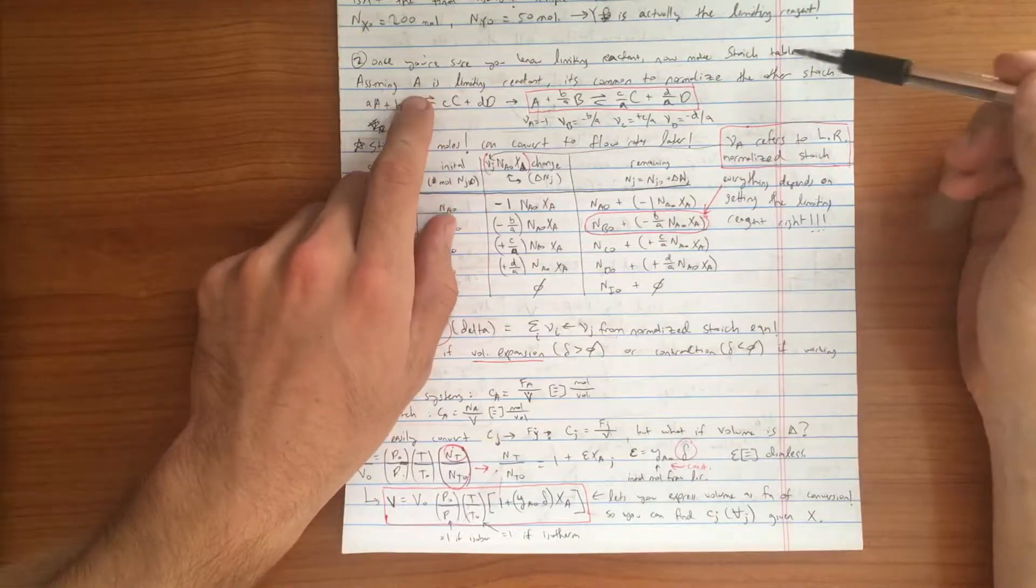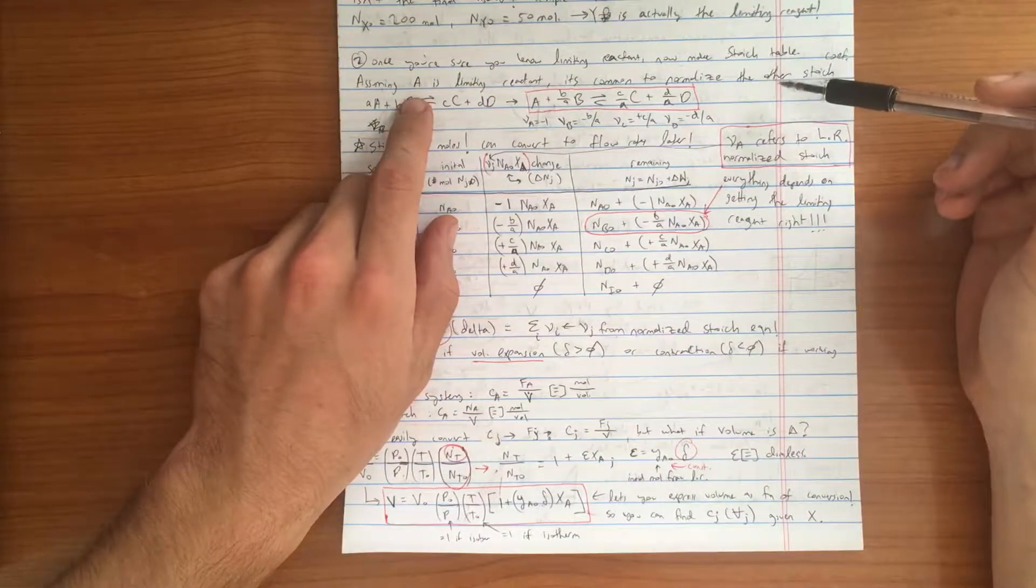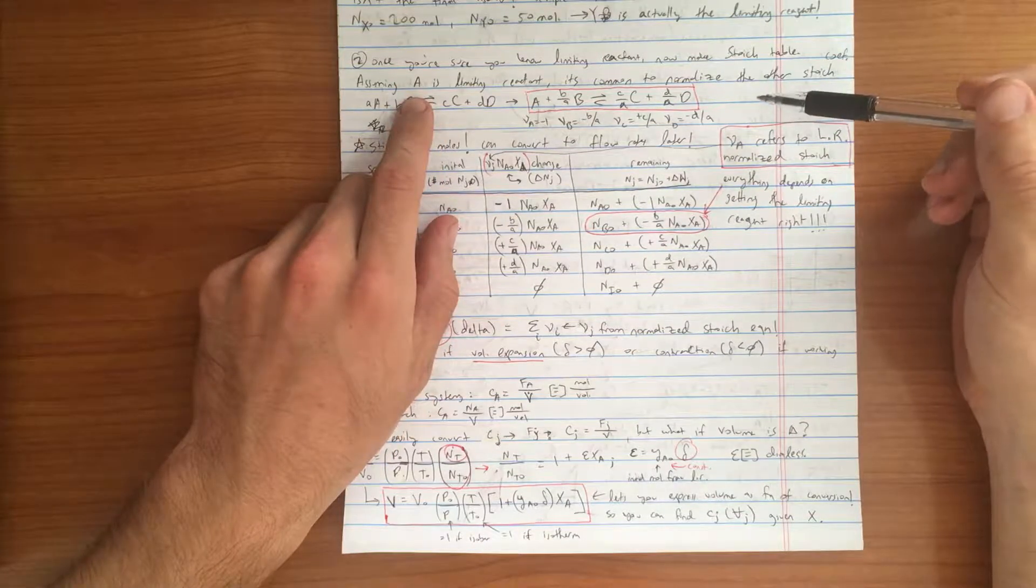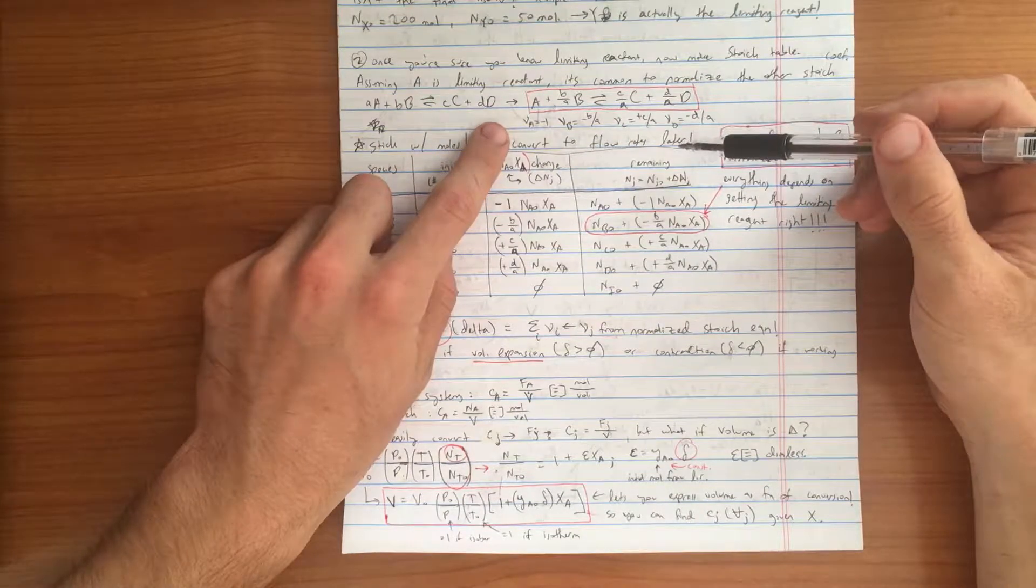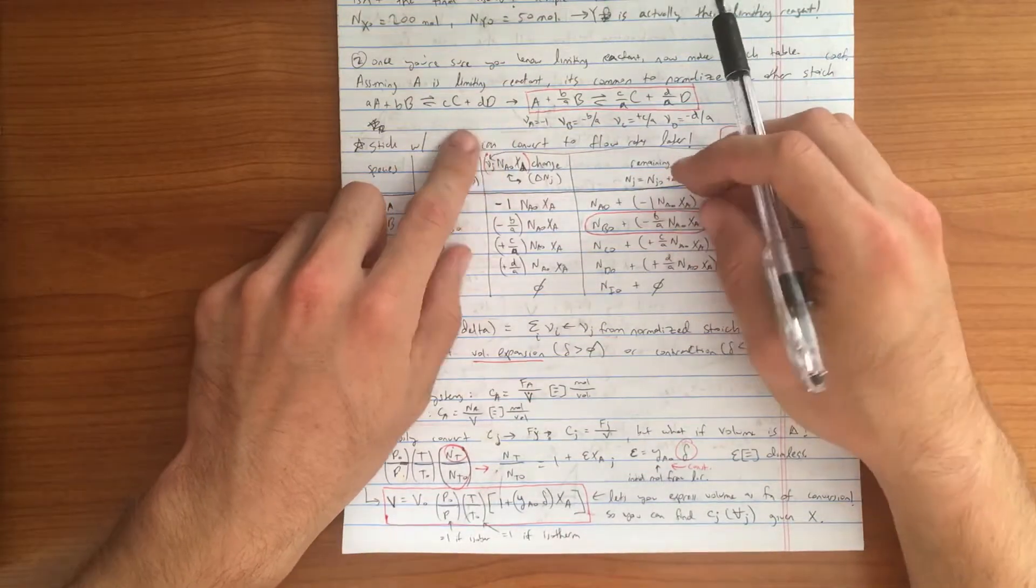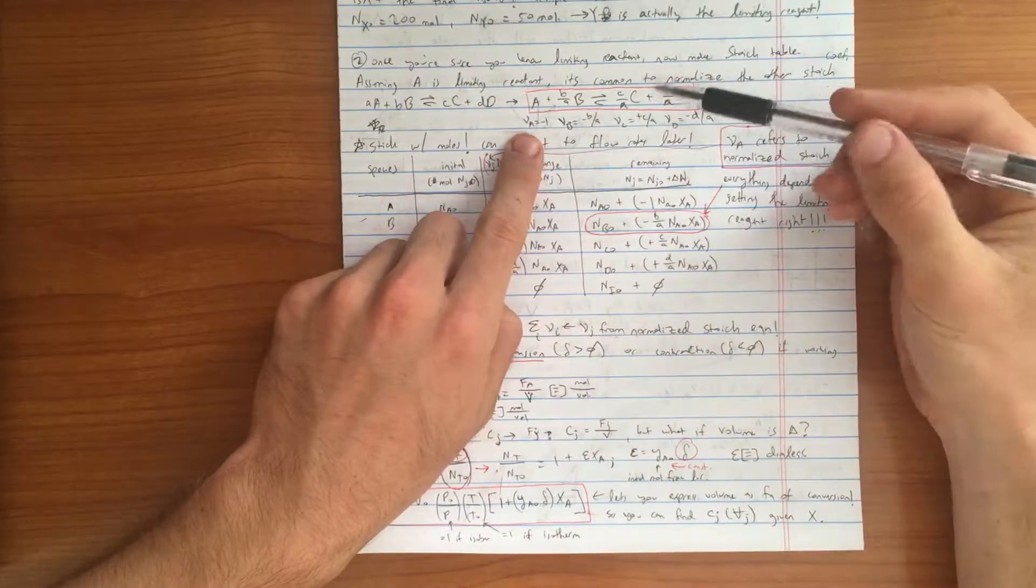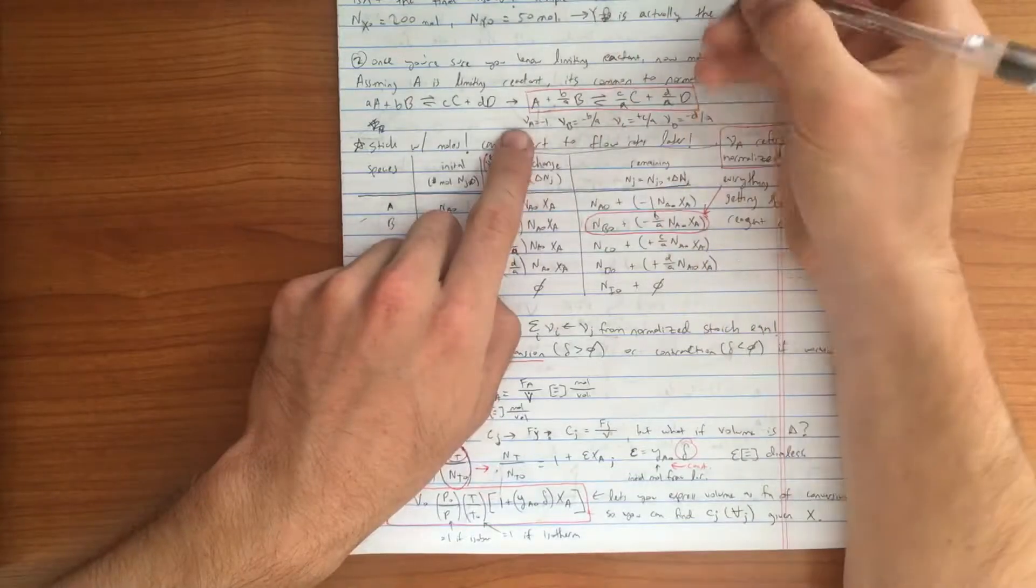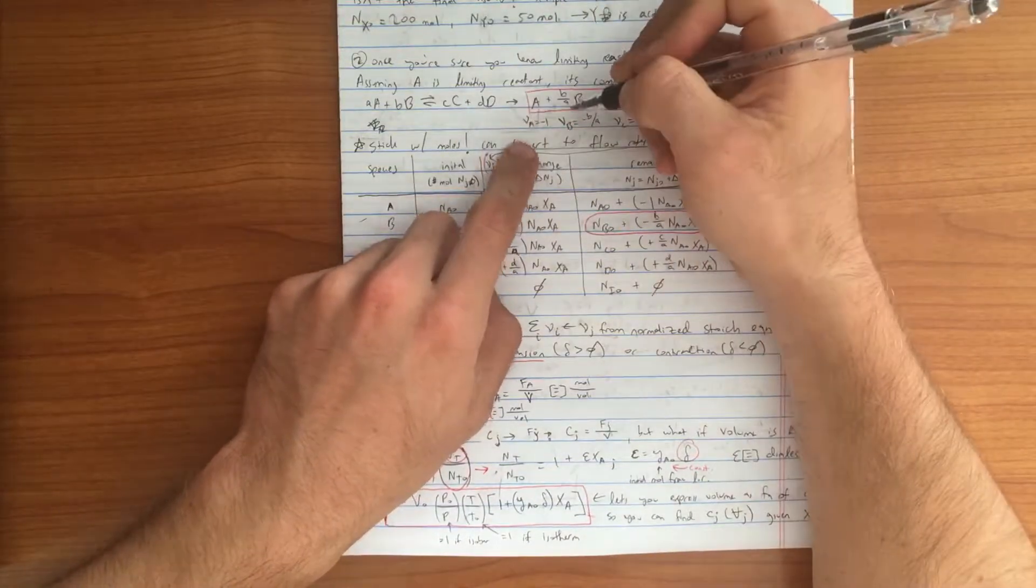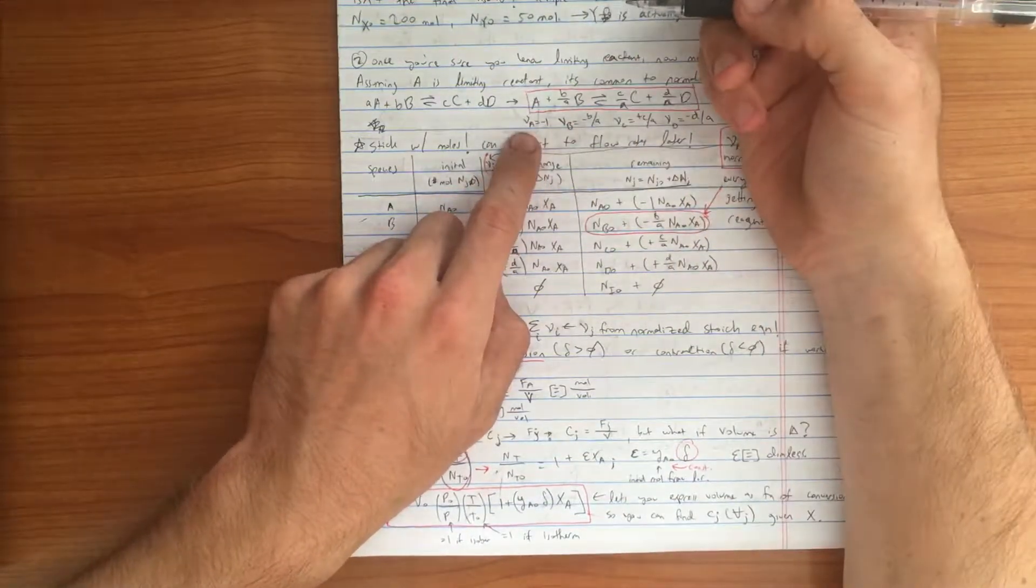What I like to do is to normalize all the stoichiometry coefficients based on your limiting reagent's stoichiometric coefficient. In chemical engineering, we call stoichiometric coefficients nu. This is the symbol nu, not V. Nu sub J.